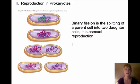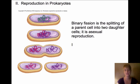Reproduction in prokaryotes is a little different than in eukaryote cells. Bacteria reproduce by binary fission, which is just the splitting of the cell into two daughter cells — it's asexual reproduction, so those two daughter cells are going to be exactly alike.